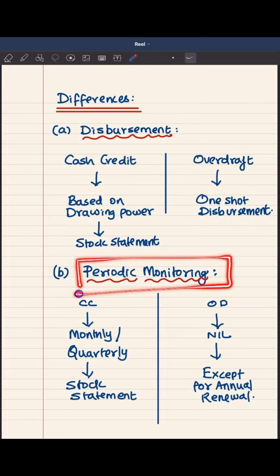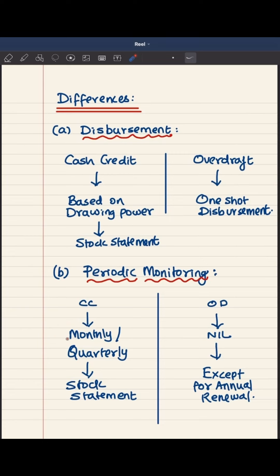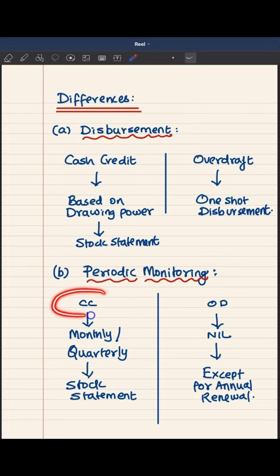Difference number two is about periodic monitoring. Cash credit facility will be subjected to periodic monitoring. Every month, the borrower is expected to submit a stock statement — in some banks or credit facilities, it can be on a quarterly basis. At periodical intervals, this stock statement has to be submitted to the bank, and every month the bank will fix the drawing power. In this way, the account is periodically reviewed by the bankers.